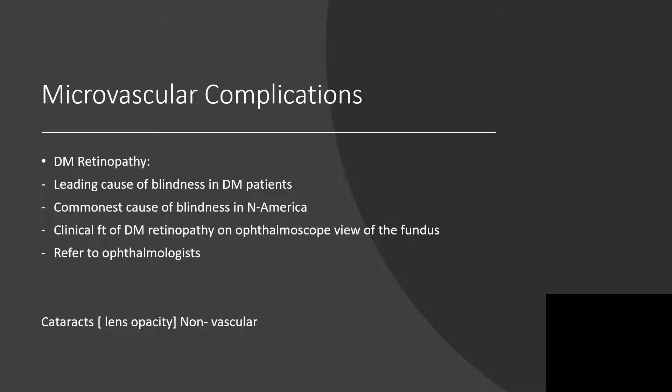Diabetic retinopathy is the leading cause of blindness in diabetic patients. As a matter of fact, this is the common cause of blindness in North America. The clinical features of diabetic retinopathy can be viewed on an ophthalmoscope, and the appropriate thing to do is to refer to an ophthalmologist. However, some diabetic patients do come down with cataracts — that's a lens opacity that is non-vascular.